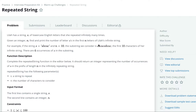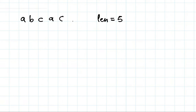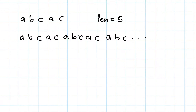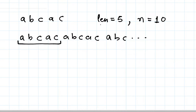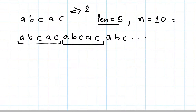For example, we have 'abcac' and n is 10. So what should be the count? The string length is 5, but it is repeated infinitely many times — 'abcac' then again 'abcac' and so on. We are given n = 10. Since 5 repeats twice to give 10, and the original string had 2 occurrences of 'a', repeating it twice gives 4 a's. So the answer is 4.